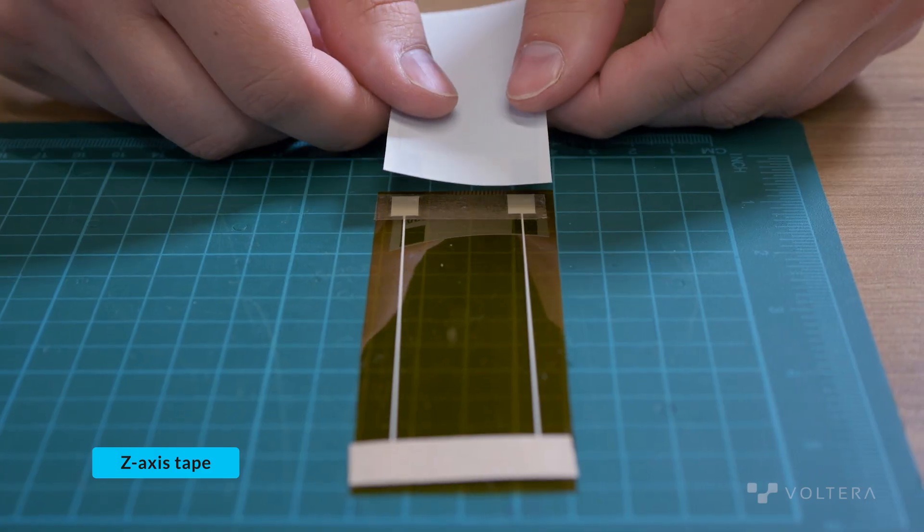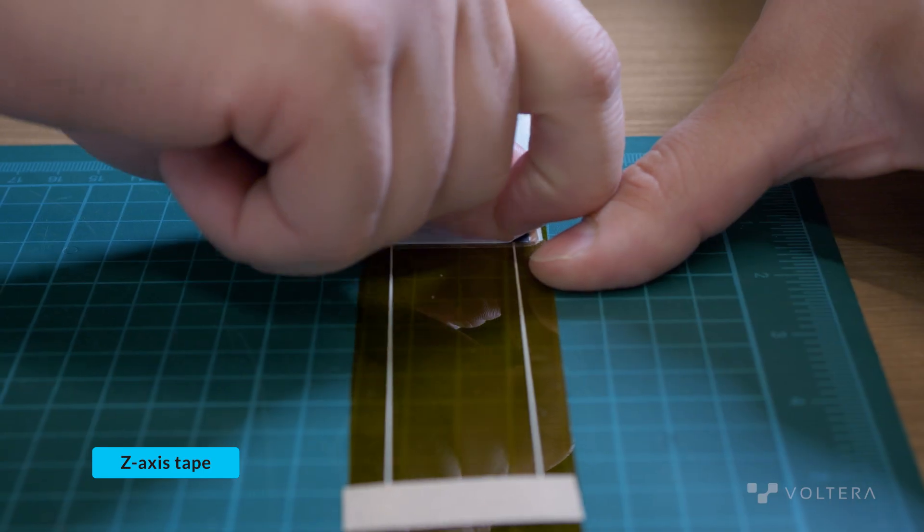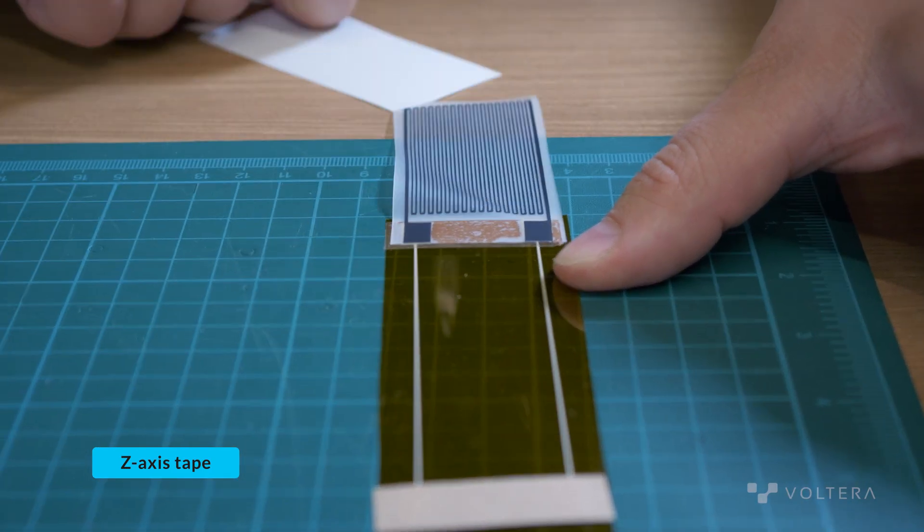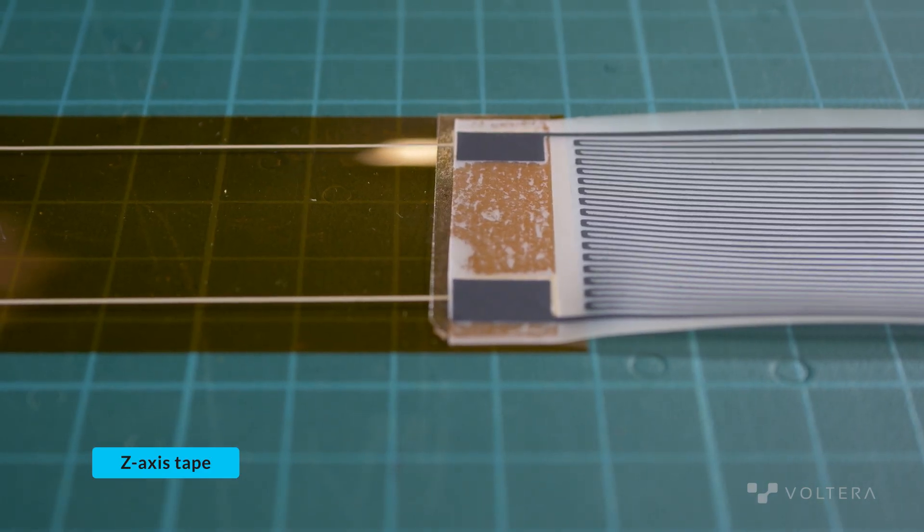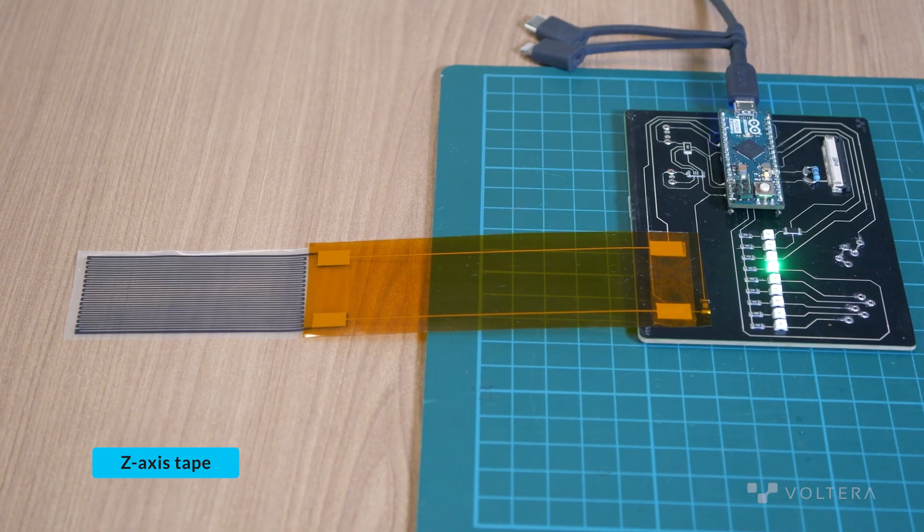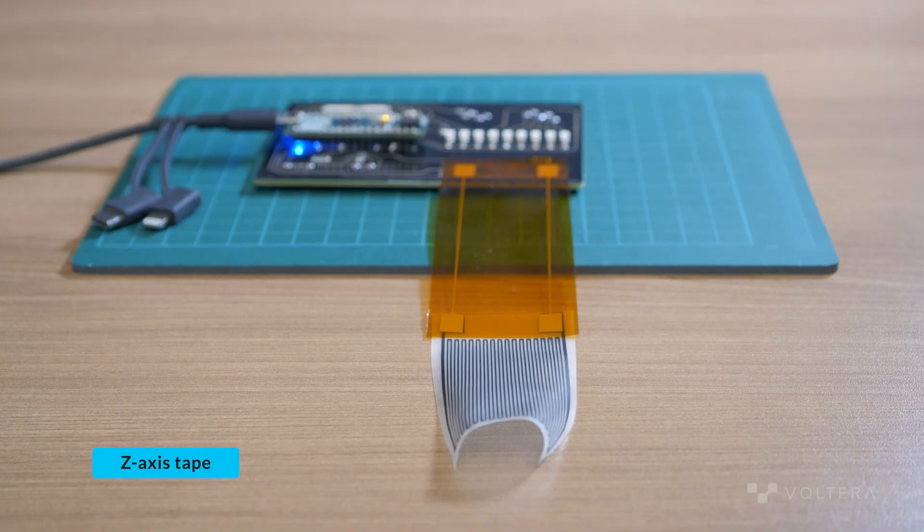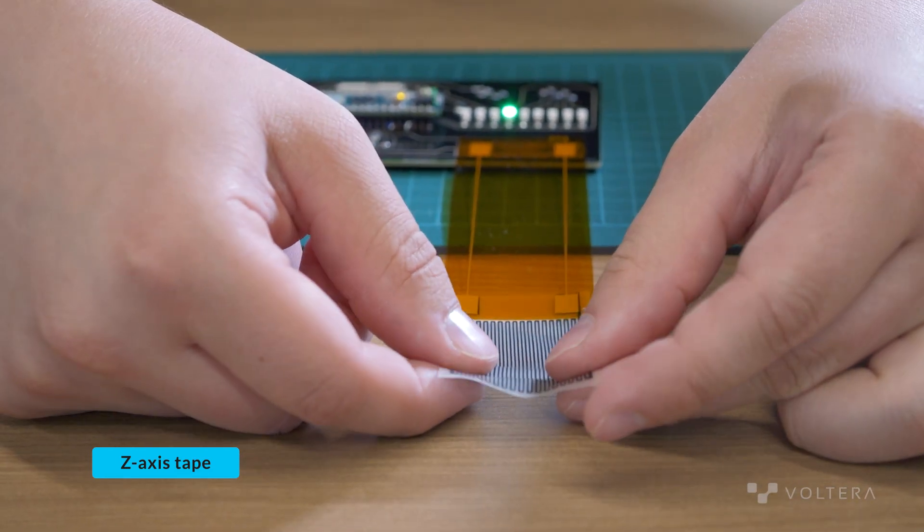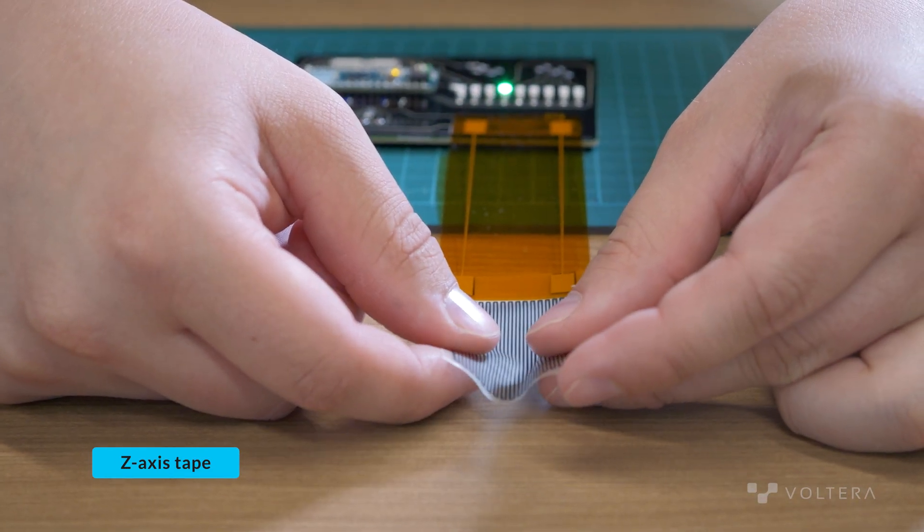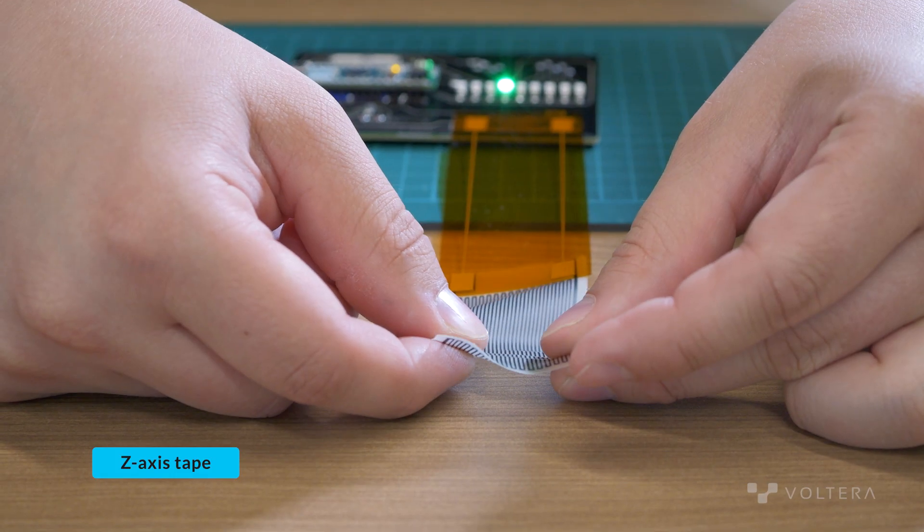The tape is placed on the top of one connecting pad on the substrate and the second circuit is placed on top of the tape. The silver particles in the z-axis tape create connections up and down along the z-axis between the substrates, but the particles are far enough apart that it does not create a connection side to side.